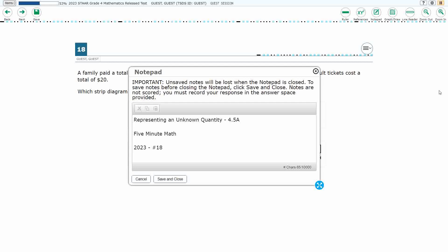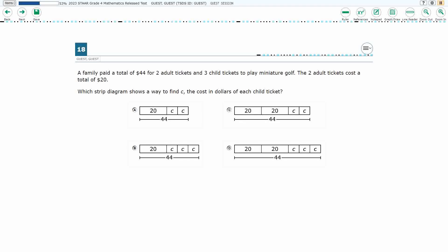Hello and welcome to 5-Minute Math. Today we are looking at the 4th grade concept of representing an unknown quantity. This is standard 4.5a in the great state of Texas, and we are using item number 18 of the 2023 released STAR test.